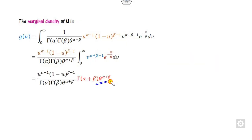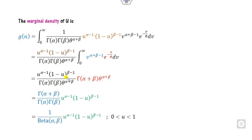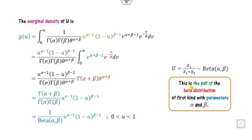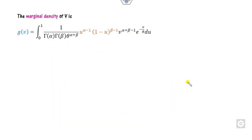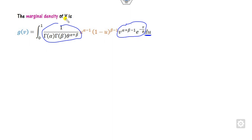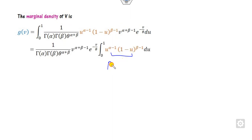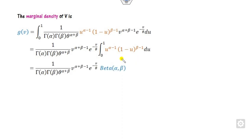Recall that the integral of x^(n-1) · e^(-x/θ) is gamma(n) divided by θ^n. Using this, where a = 1/θ, you can evaluate the integral. The result involves the beta function, and what remains is nothing but the beta distribution.